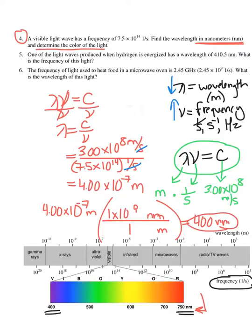I can then go to the spectrum and see — 400 nanometers, that's violet, or maybe you say purple light. So notice when I was plugging into the equation lambda times nu equals the speed of light, I made sure I was getting units of meters, and then I did a conversion because I have to go by what the units of c are. I definitely recommend plugging in with units.